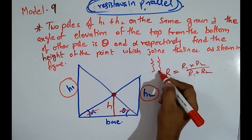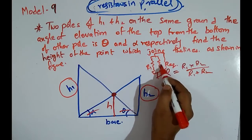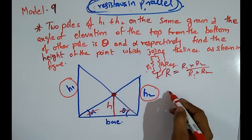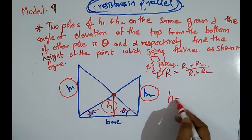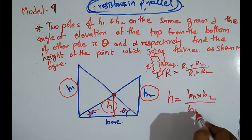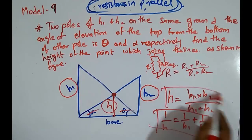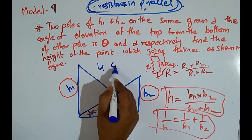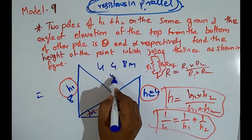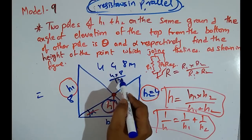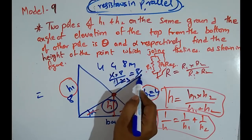The same formula applies here: the resultant height h = h1·h2/(h1 + h2), or equivalently 1/h = 1/h1 + 1/h2. For example, if the heights are 4 meters and 8 meters, then h = (4 × 8)/(4 + 8) = 32/12 = 8/3 meters.